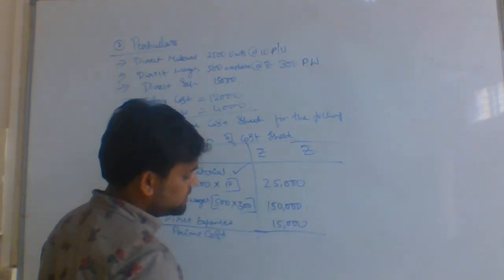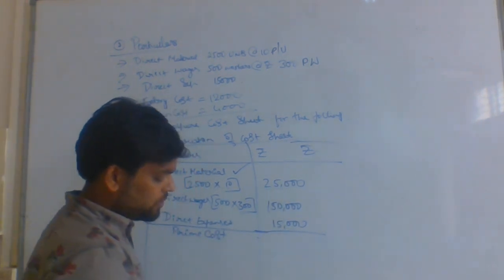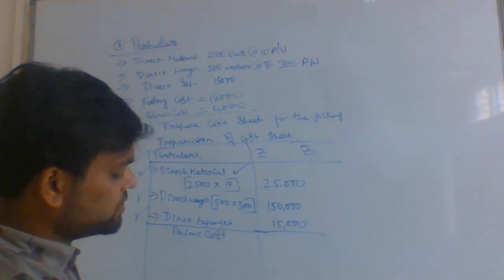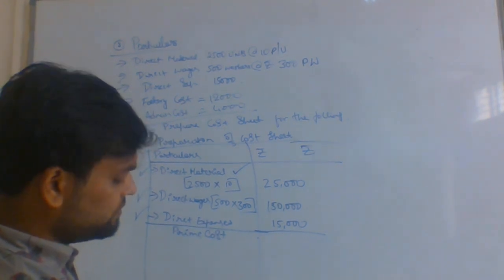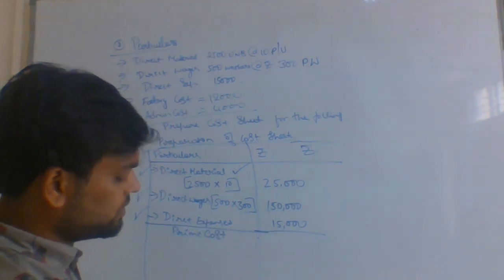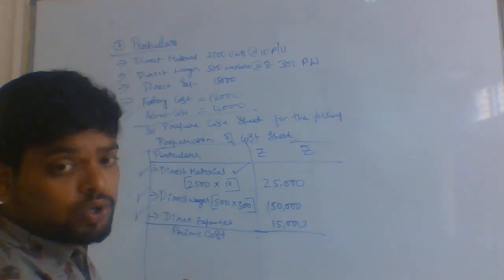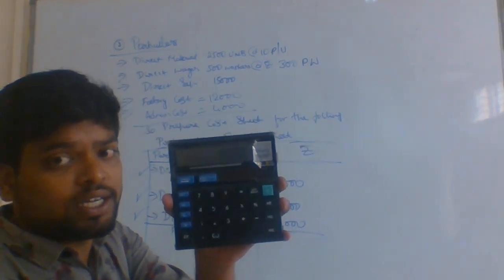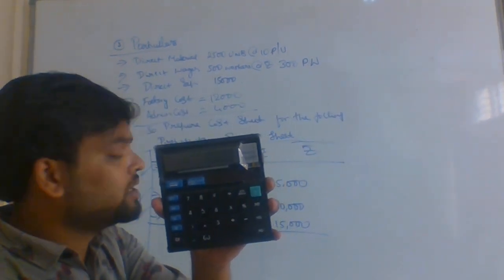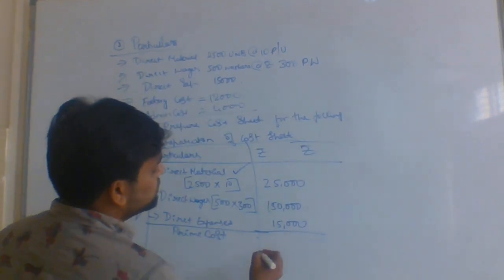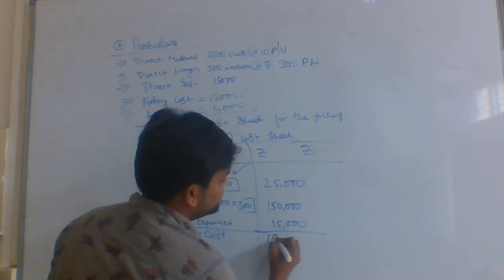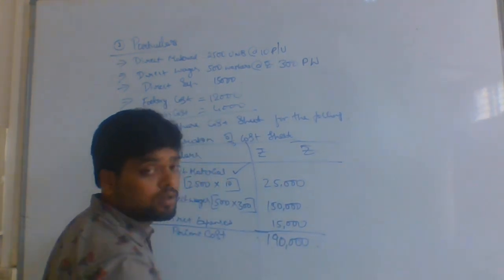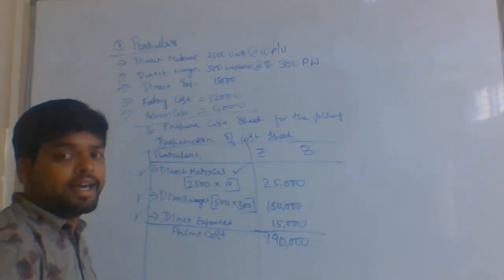Prime cost of rupees: 25,000 plus 1,50,000 plus 15,000 — so 1,90,000 is our prime cost.